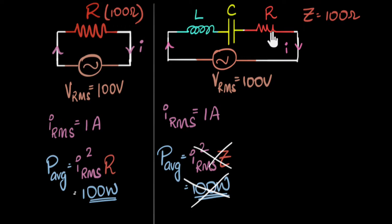On average, it consumes zero power, which means the entire impedance does not consume power. Only the resistive part of it consumes power, which means even in this circuit, the average power consumed would only be IRMS squared times R. And resistance would definitely be less than impedance.